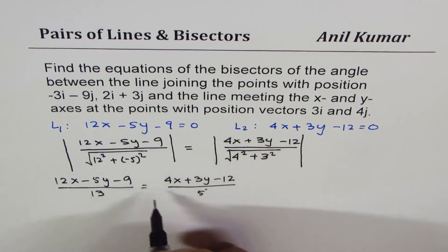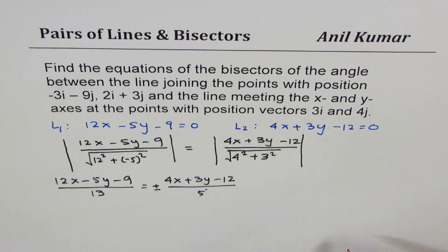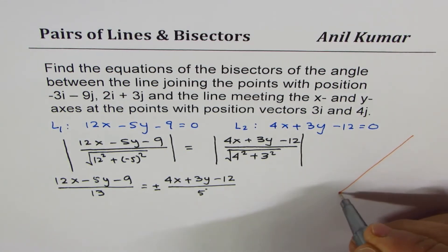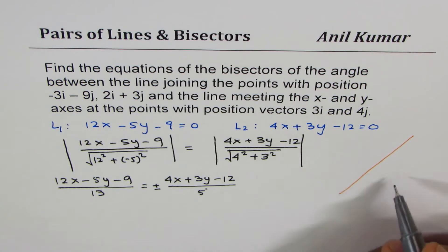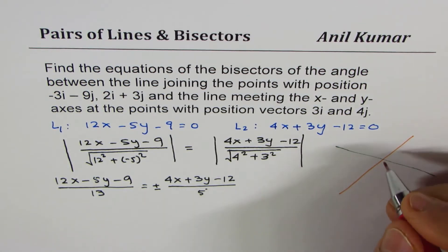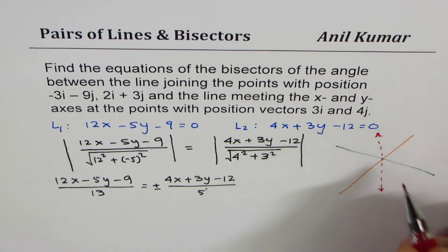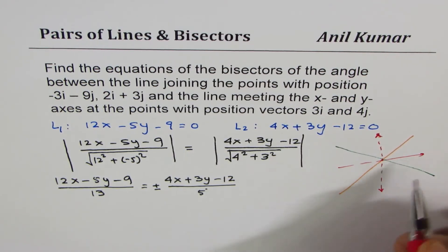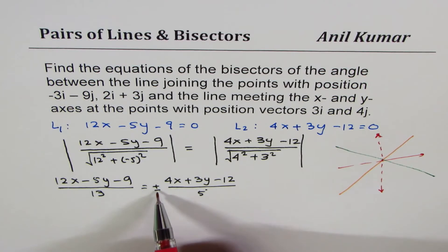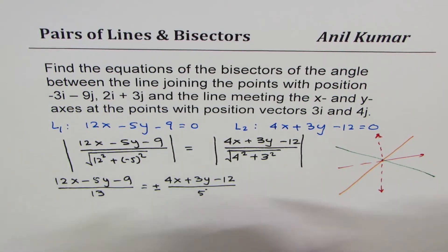The value inside the absolute value could be positive or negative, which gives you two bisectors. Looking at our figure, one equation represents one bisector and the other equation represents the other bisector. The plus and minus cases give both bisectors — that's the key. Now we can solve both equations.